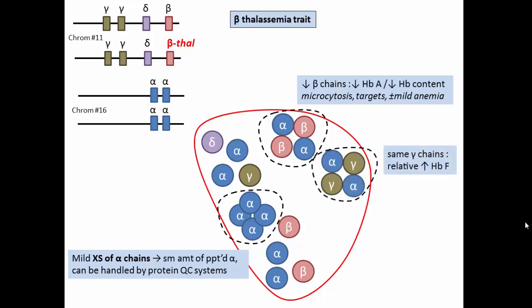Because gamma production is not affected, there is a relative increase in the proportion of hemoglobin F in the cell. Similarly, there is a relative increase in the proportion of A2 in the cell.